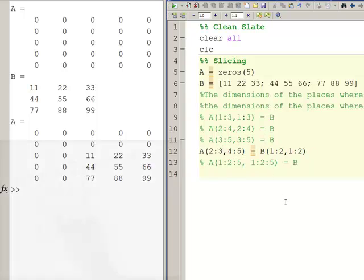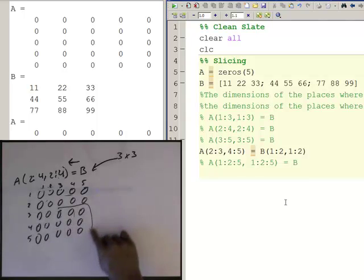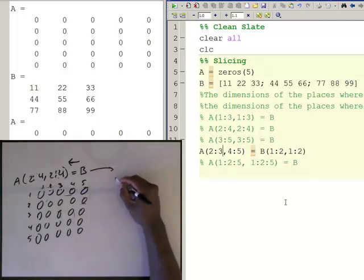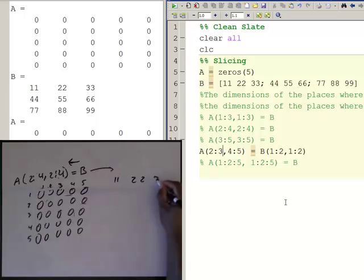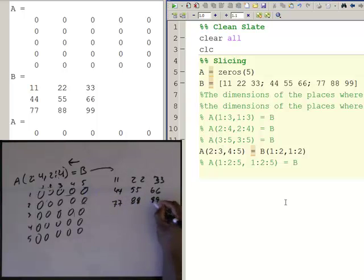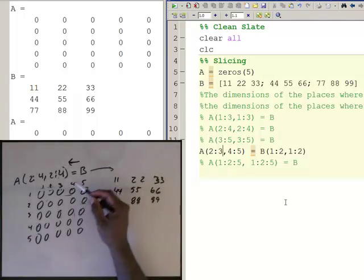And now I'm going to go ahead and write B so we can see its parts: 11, 22, 33, 44, 55, 66, 77, 88, and 99. Okay, so now I'm looking at...